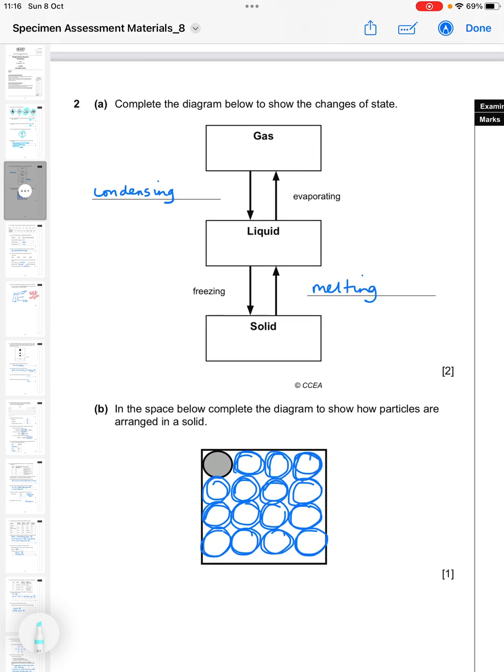Question two: complete the diagram below to show the changes of state. We've got here solid going to a liquid going to a gas and the other way as well. Going from a gas to a liquid in this direction would be condensing, and then the bottom here going from a solid to a liquid in this direction would be melting.